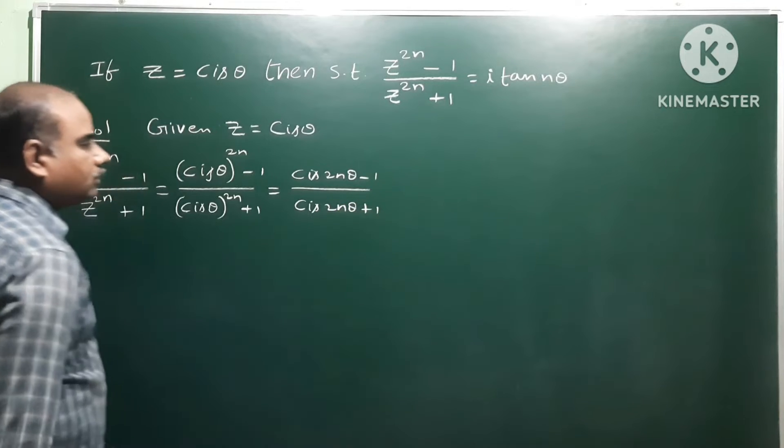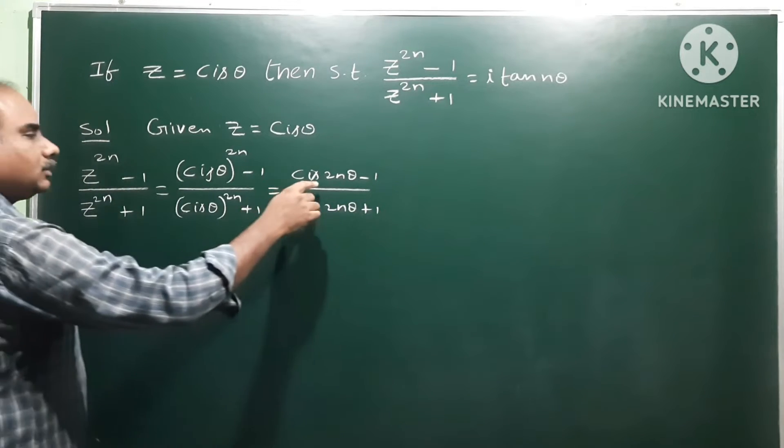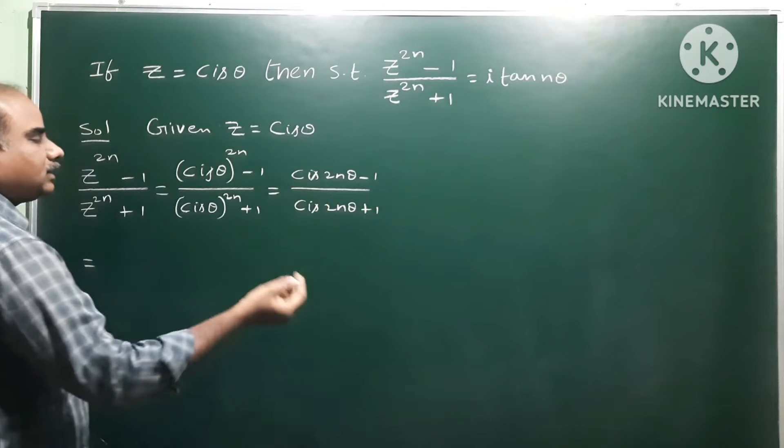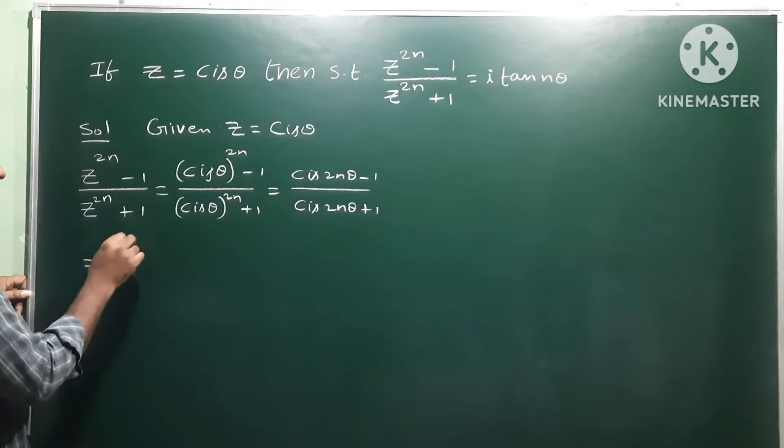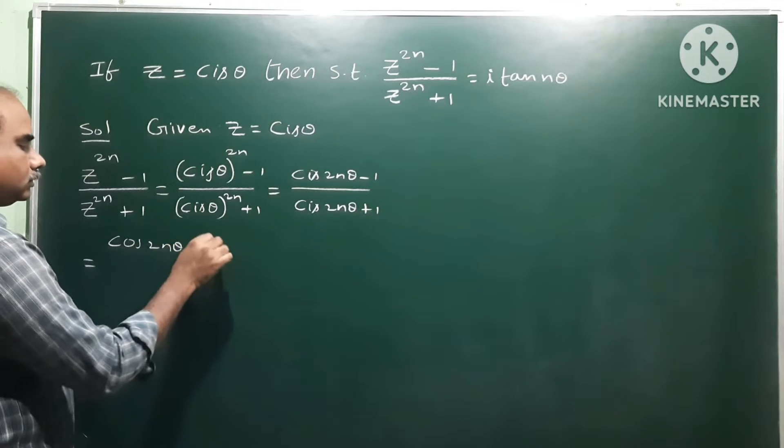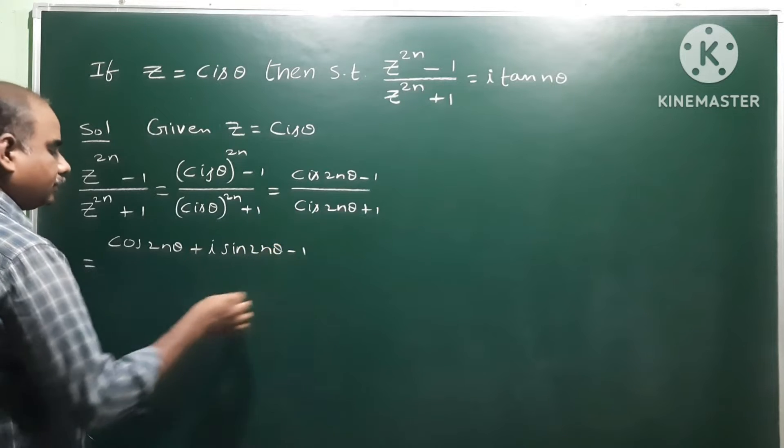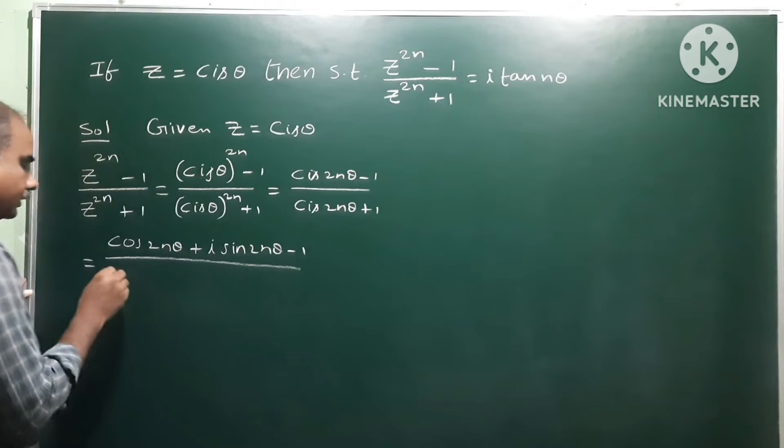cis 2nθ plus 1. That is equal to, let's elaborate: cis means cos plus i sin, so cos 2nθ plus i sin 2nθ minus 1 by